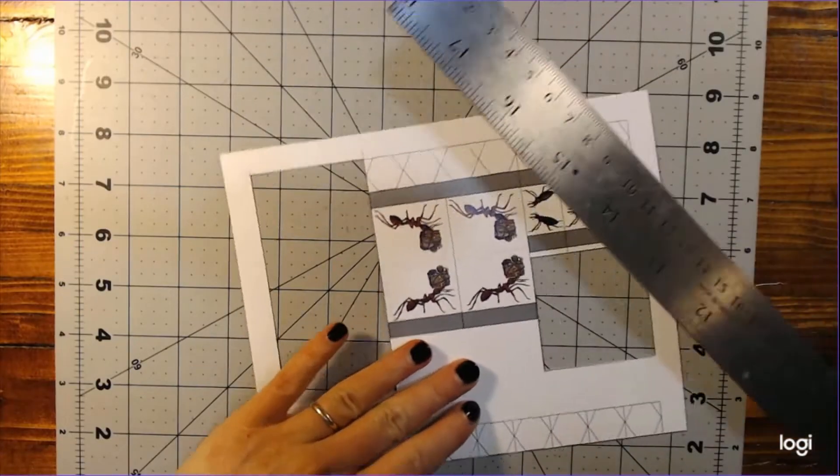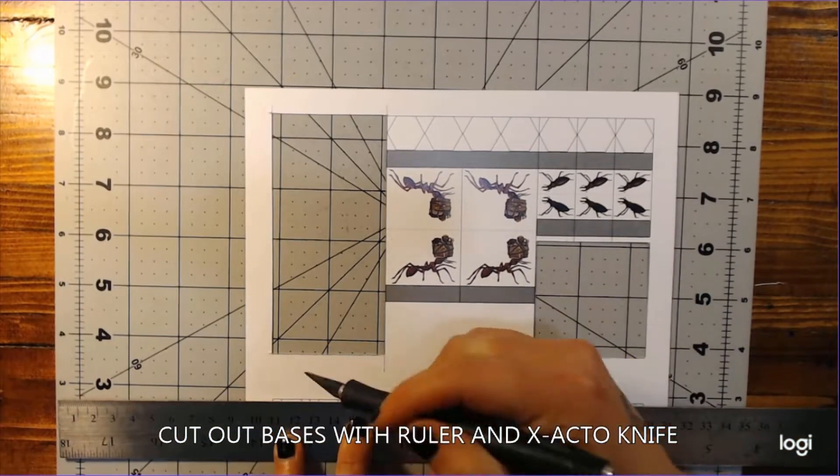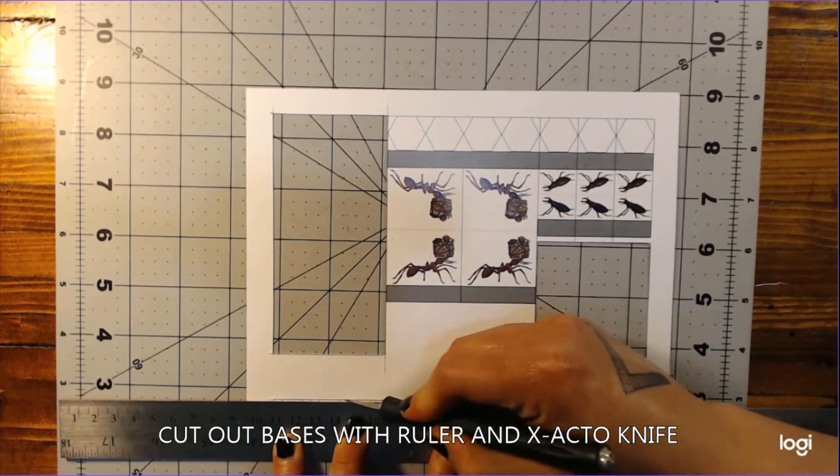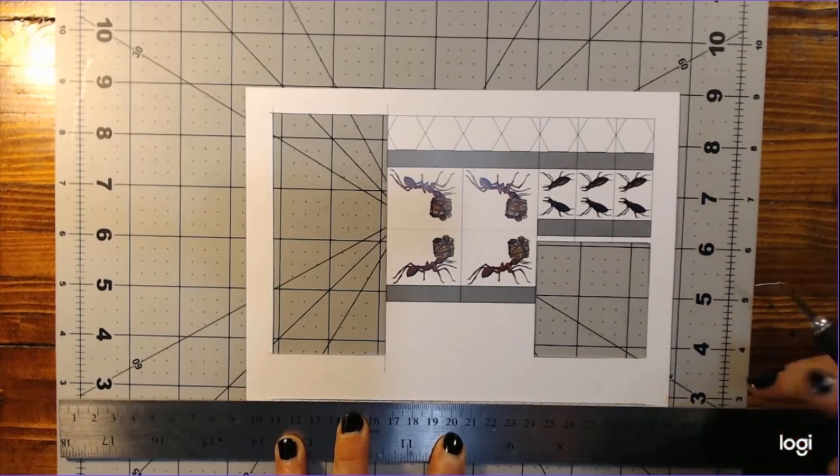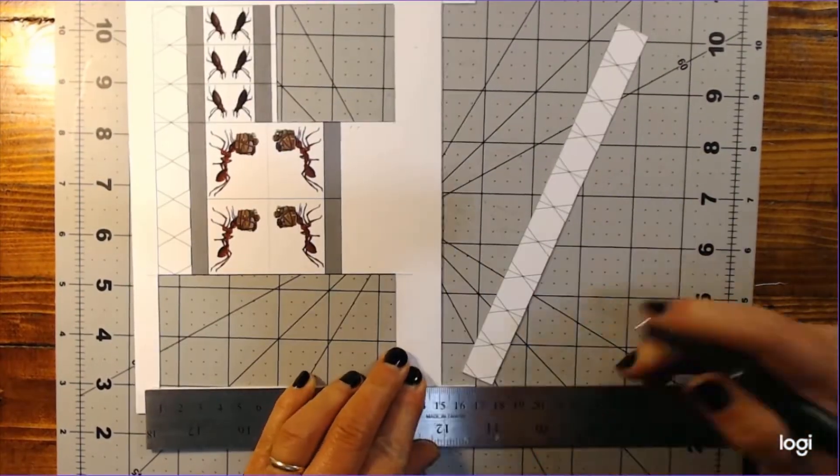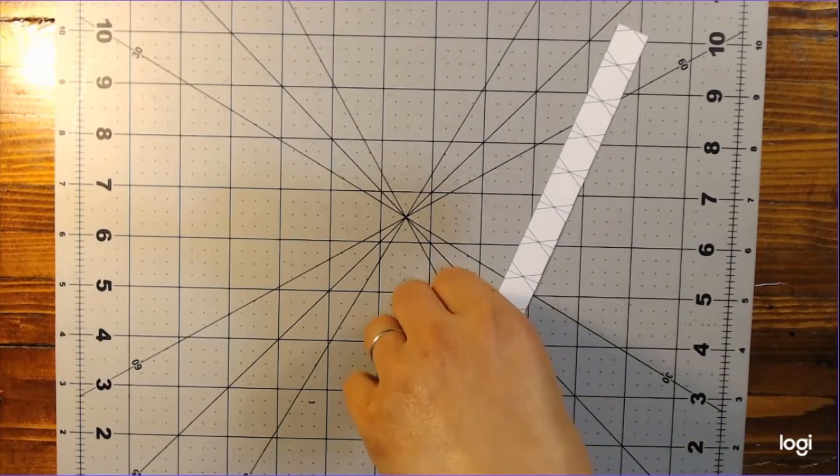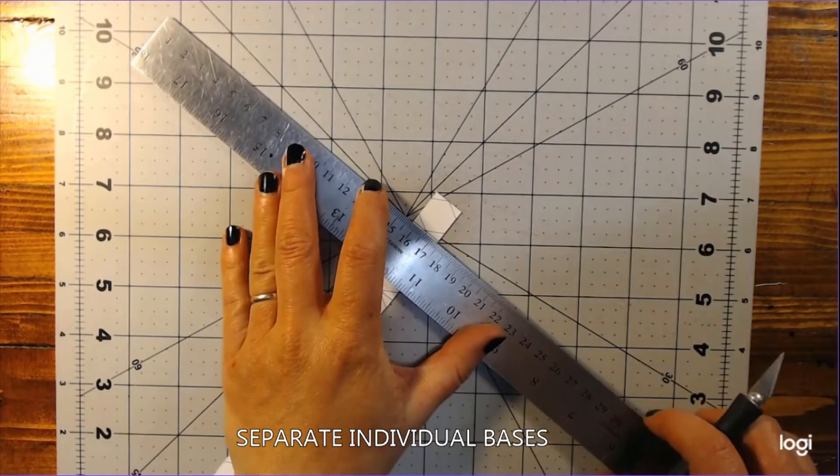While you're waiting for the glue on the figures to set, go back to your sheet of cardstock and use your exacto and ruler to cut out the line of bases that correspond with your figures. They're printed right underneath them. Use your knife to carefully separate each base from the row.